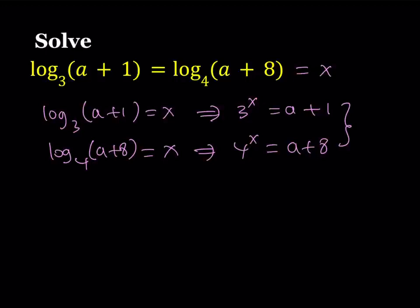I have two variables, but it's easier to solve because now I can relate them. I have 3^x equals a+1 and 4^x equals a+8. And as you know, a+1 and a+8 are related. One of them is 7 more than the other. So I can safely say that 4^x equals 3^x plus 7.